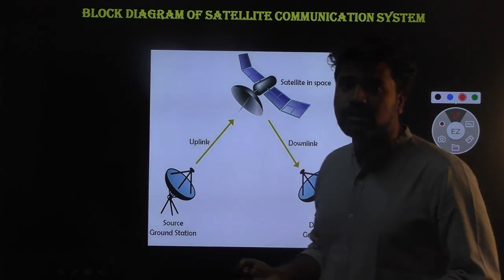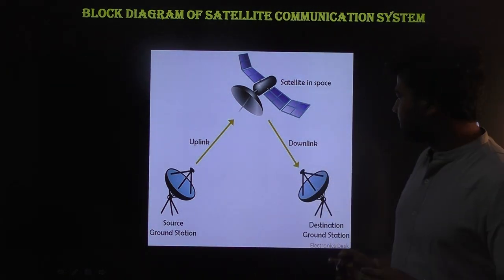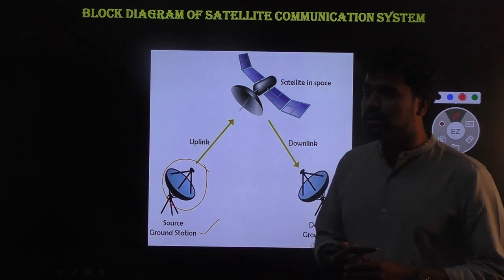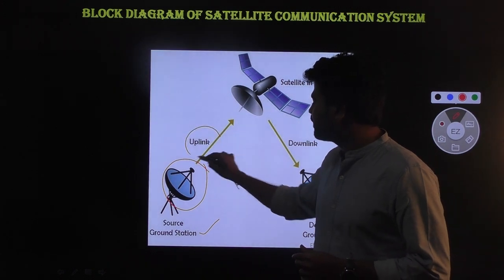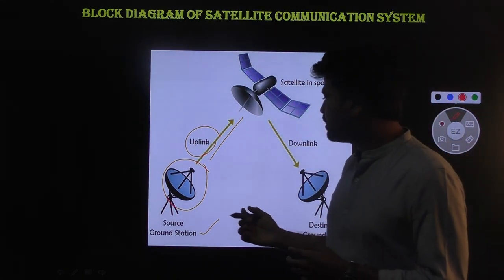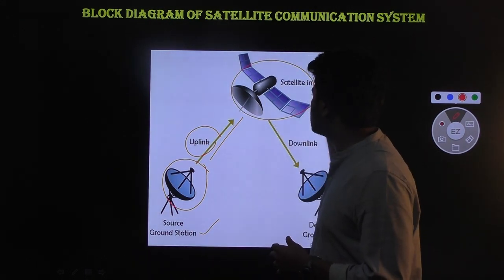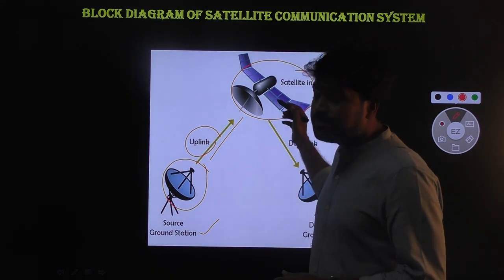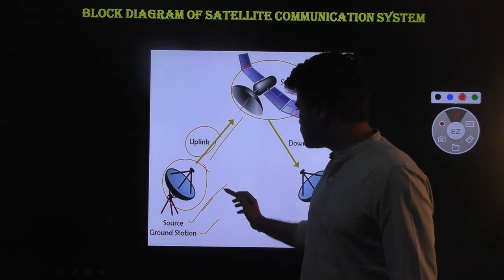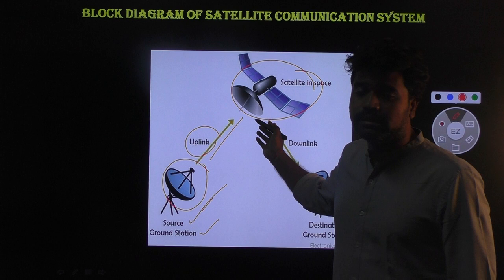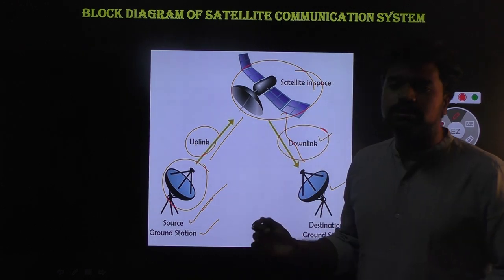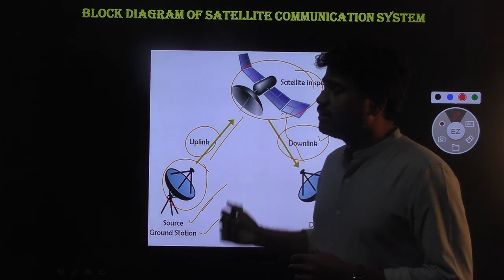This is the basic block diagram of satellite communication. Here there is a ground station which is the source or transmitting part. We use a channel called the uplink to send information or any signal. Here the satellite, which is present in space, works as a transponder. It receives the signal sent from the ground station and again retransmits it to the destination through a channel called the downlink. This is the basic flow diagram of satellite communication.